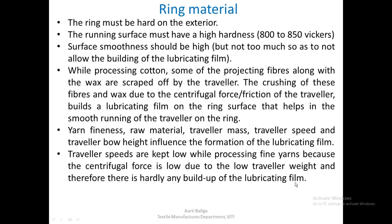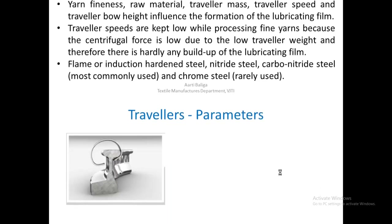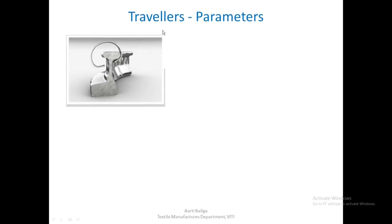Traveler speeds are kept low while processing fine yarns because the centrifugal force is low due to the low traveler weight. A low traveler weight is needed so it does not put a lot of tension into the yarn and break it. Because of this low traveler weight, centrifugal force is also less, so less lubricating film is generated on the ring surface, and one has to go for a lower traveler speed. Ring materials include flame or induction hardened steel, nitride steel, carbon nitride steel (more commonly used), and chrome steel.